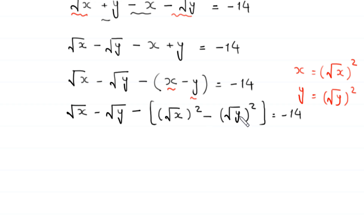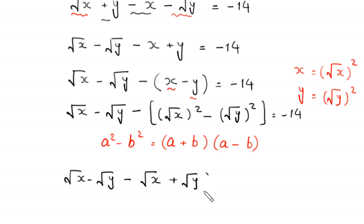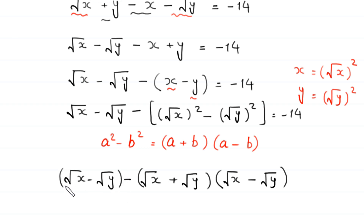Here we have a difference of two squares. Using the algebraic identity a squared minus b squared equals a plus b times a minus b, this expression becomes root x minus root y minus root x plus root y times root x minus root y, equals negative 14.